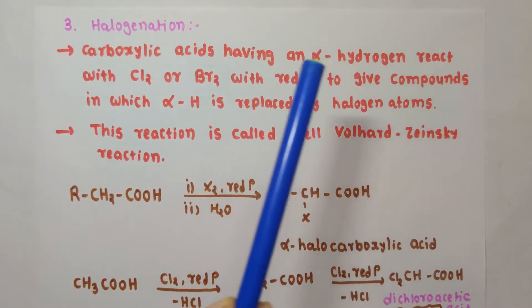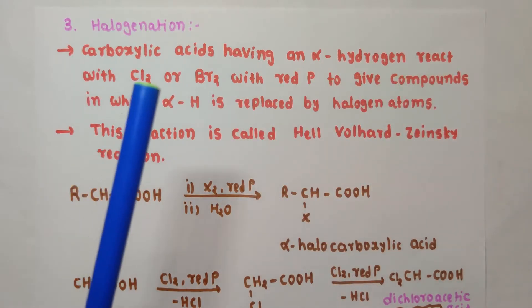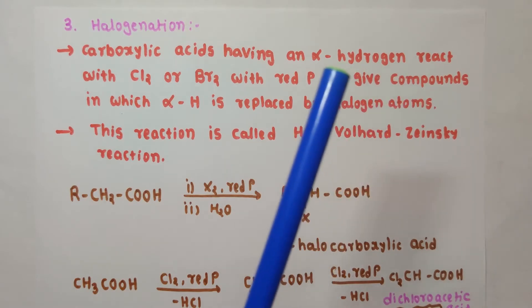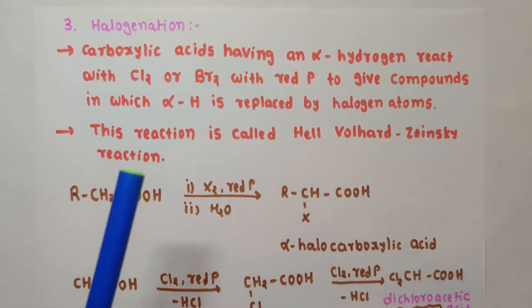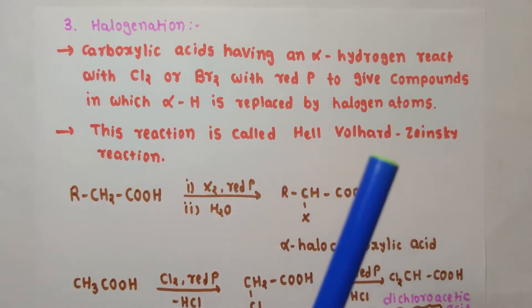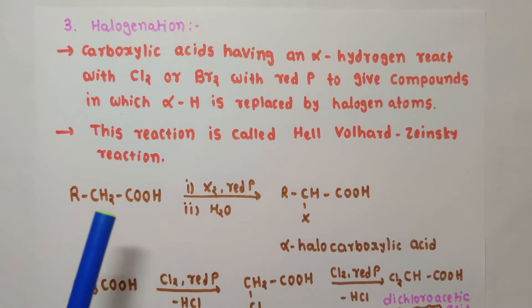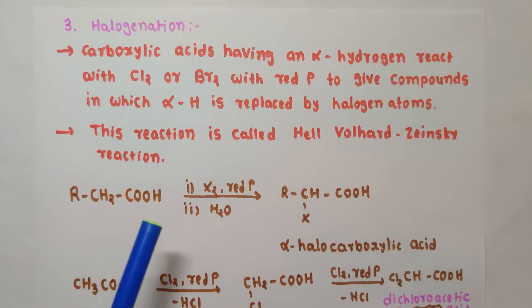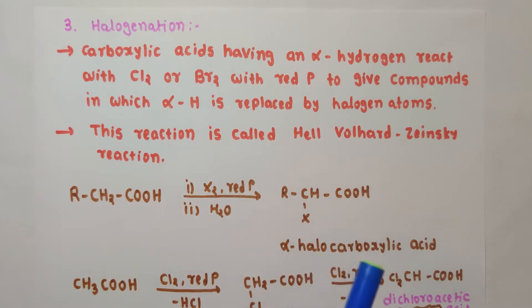Carboxylic acids having an alpha hydrogen atom react with chlorine or bromine in the presence of red phosphorus to give compounds in which the alpha hydrogen atom is substituted by a halogen. This reaction is known as the Hell-Volhard-Zelinsky (HVZ) reaction. In the equation, the carboxylic acid has two hydrogen atoms on the alpha carbon. On reaction with Cl2 or Br2 with red phosphorus, you get alpha-halo carboxylic acid.